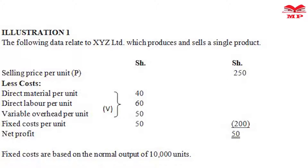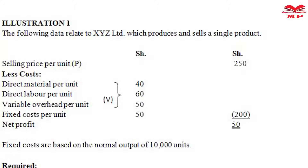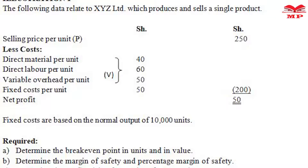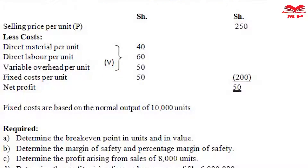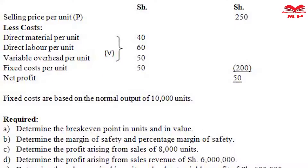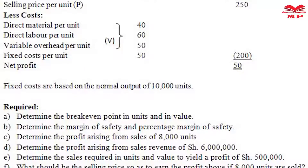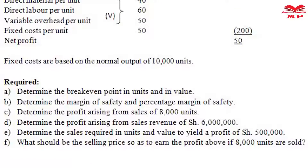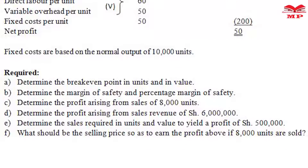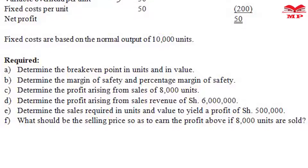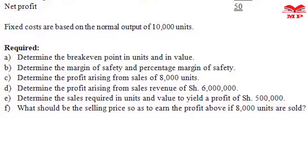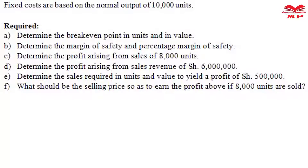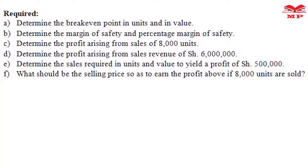Required: (a) Determine the break-even point in units and in value. (b) Determine the margin of safety and percentage margin of safety. (c) Determine the profit arising from sales of 8,000 units. (d) Determine the profit arising from sales revenue of 6 million shillings. (e) Determine the sales required in units and value to yield a profit of 500,000 shillings.